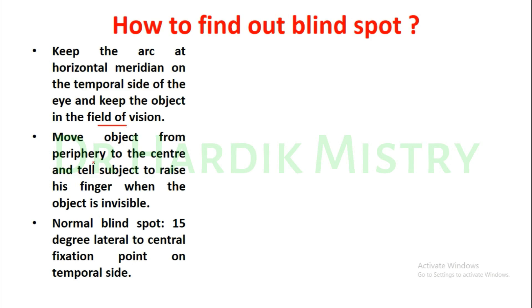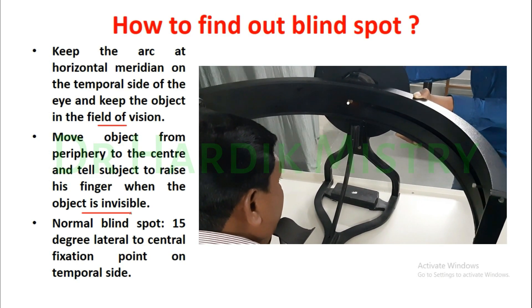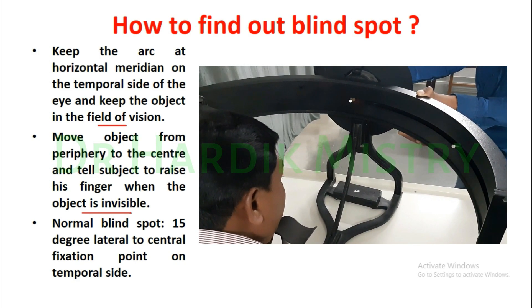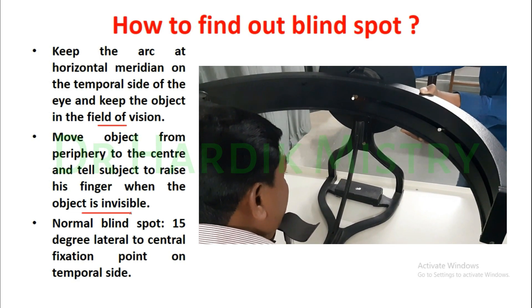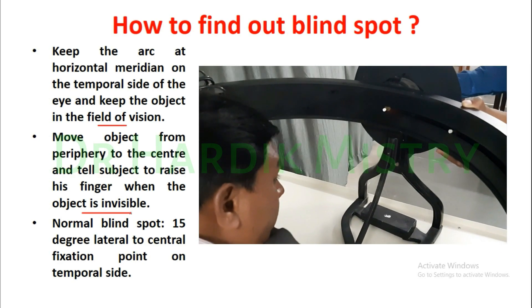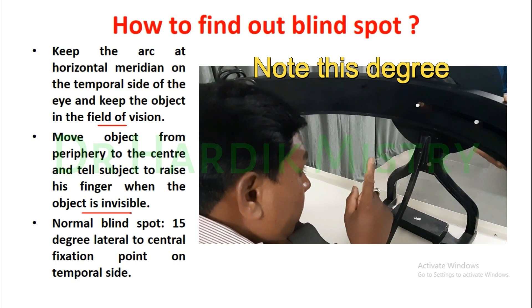Move the object from the periphery to the center and tell the subject to raise his finger when the object is invisible. You have to move the object from the peripheral part to the center, and tell your subject to raise their finger whenever the object is not visible. That is the blind spot.